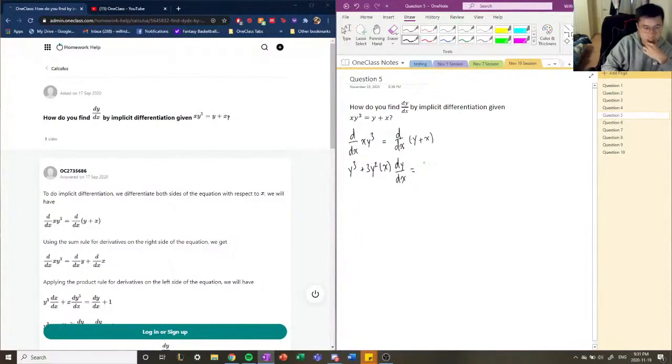So for the other one, this is just dy over dx plus one. So it's derivative of y, which is just dy over dx, and then it will be just derivative of x, which is just one.